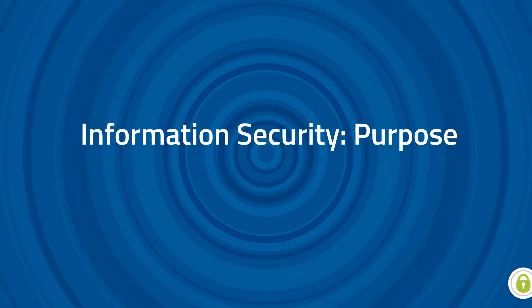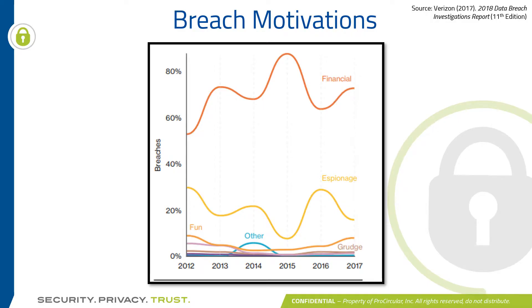Our first stop is purpose. Back when the internet was first created, many people would hack into other computers and systems because it was fun, because they could, or if they're like Ferris Bueller, they wanted to change their attendance numbers. Nowadays it's more about financial gain and maybe a little espionage.